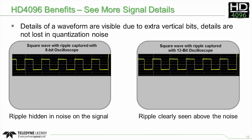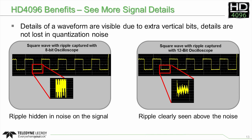Beyond crisper, cleaner waveforms, HD4096 technology enables the oscilloscope to display more signal details. Here, a waveform with ripple is captured by both an 8-bit oscilloscope and a 12-bit HDO. It looks like there may be some ripple on the 8-bit waveform, but zooming in only shows noise. Zooming into the 12-bit waveform clearly shows the ripple — a signal detail the user has never been able to quantify or even see before.